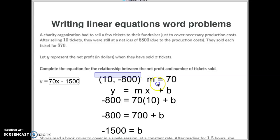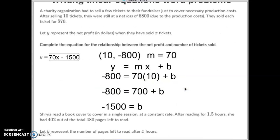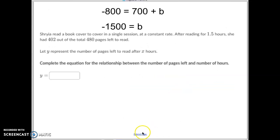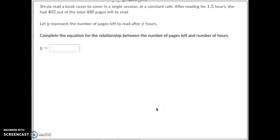So that's a nice way of doing it if they give you the slope in one point. But they sometimes ask you a little different. So let's do that one now. Here's the next one. Shira read a book from cover to cover in a single session at a constant rate. After reading for one and a half hours, she had 402 out of the total 480 pages left to read.